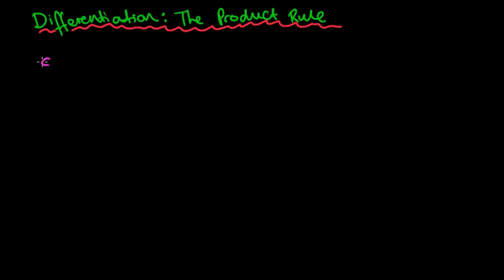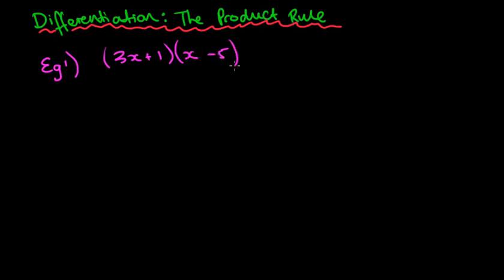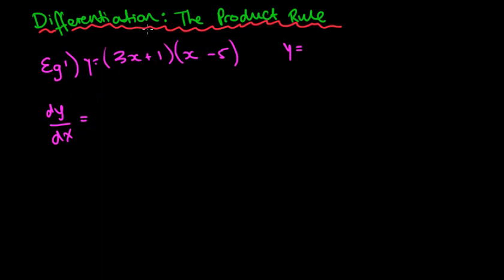To start off with, we're going to look at one particular example which I'm going to use the short method that we learnt a couple of lessons ago, and then we're going to look at a different way to write it. So we're going to look at this question: y equals (3x + 1)(x − 5). Before we can differentiate this, we need to expand the brackets, because at the moment we've got two things being multiplied together.